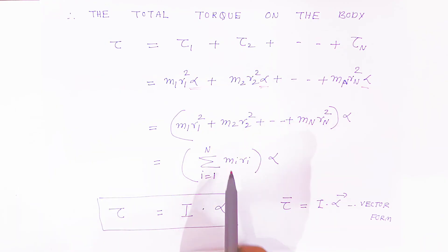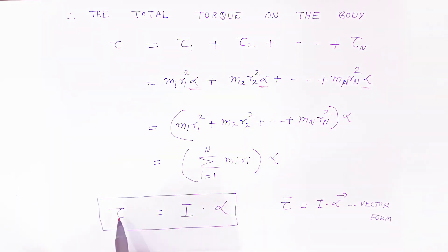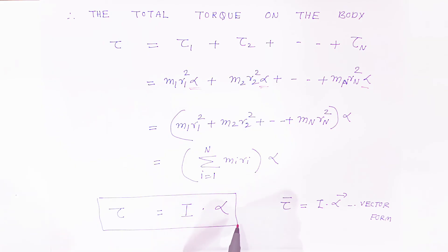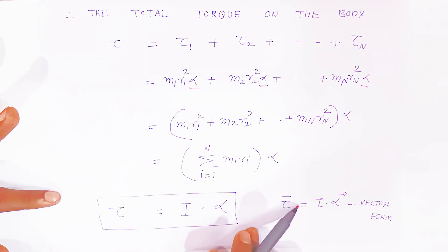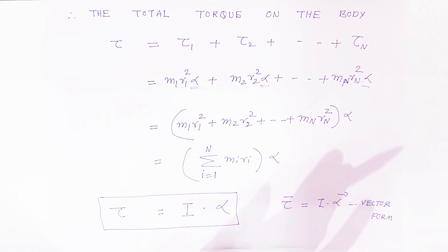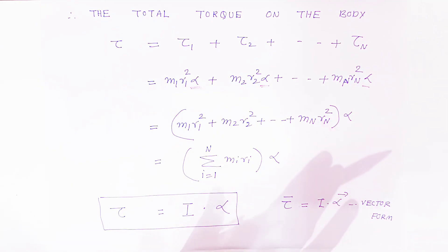This summation of mi ri squared is nothing but the moment of inertia I. Therefore, the total torque equals moment of inertia into angular acceleration: tau equals I alpha. This is a very important expression. In examinations, they ask you to solve many problems based on this, and it commonly appears as a four-mark question. These are very important.